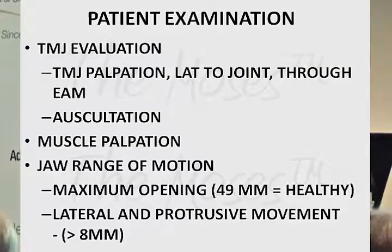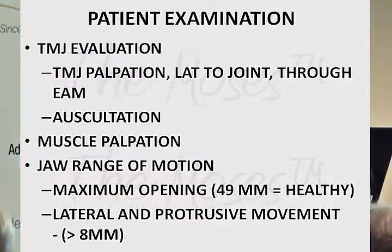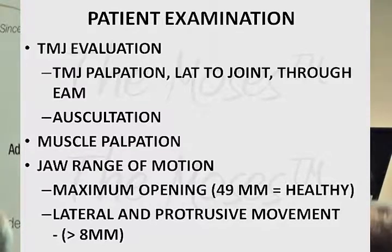Patient examination: we do a TMJ exam — palpate lateral to the joint, palpate in the external auditory meatus, auscultate. Stethoscope or Doppler, but you don't need sophisticated equipment to detect joint noises. Muscle palpation, and range of motion. 49 millimeters is the magic number for opening — more than that is hypermobile, under that is restricted mobility. Normal lateral or protrusive movement is greater than 8 millimeters.